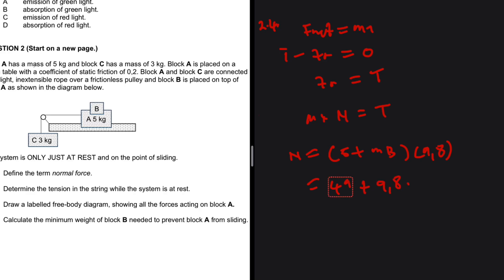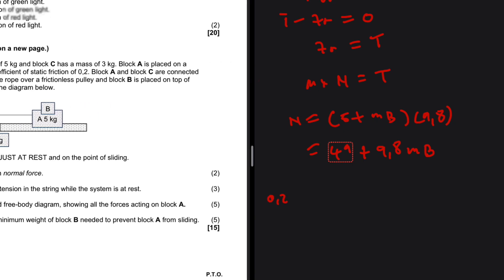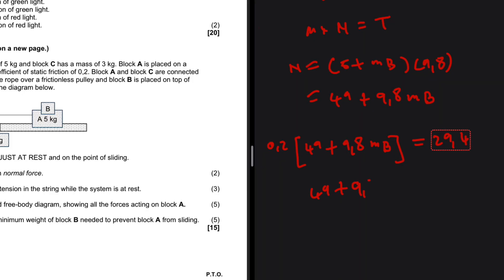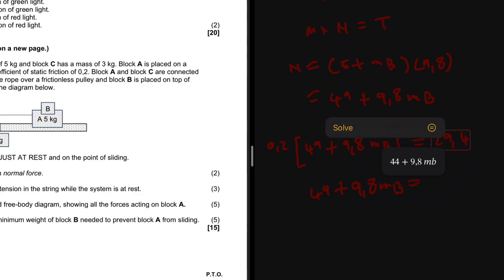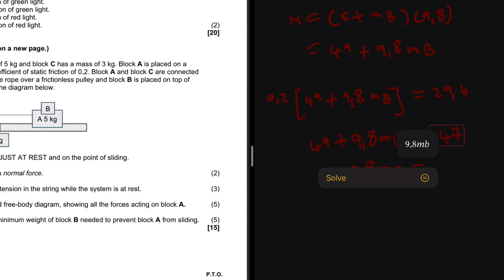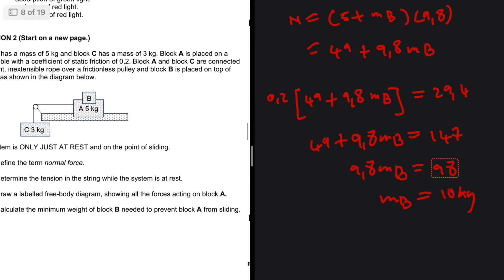Expanding: the normal force equals 5 times 9.8, which is 49, plus 9.8 times mass of B. So the equation becomes 0.2 multiplied by (49 plus 9.8 times mass of B) equals 29.4. Dividing both sides by 0.2 gives 147. So 9.8 times mass of B equals 147 minus 49, which is 98. Therefore the mass of B equals 10 kilograms.